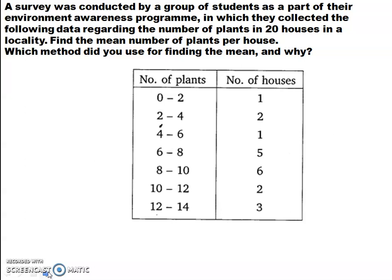Now, let's go and see what are the examples given in your textbook. Exercise 14.1, first question. A survey was conducted by a group of students as a part of their Environment Awareness Program, in which they collected the following data regarding the number of plants in 20 houses in a locality. Find the mean number of plants per house. Which method did you use for finding the mean and why? If you have to answer this question, you should go through the data first.